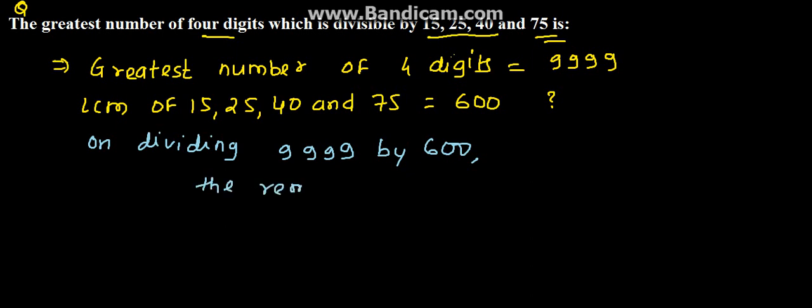We obtain the remainder, that is, the remainder is 399. So we have obtained a remainder that is 399.